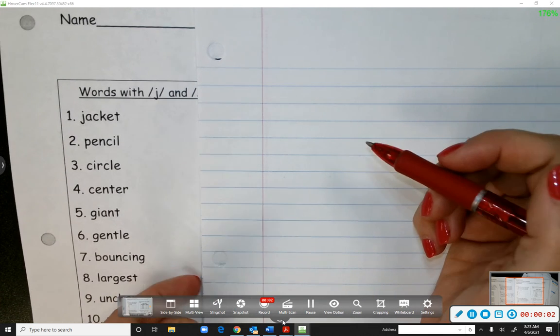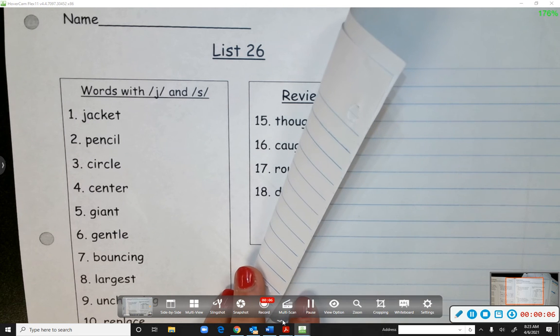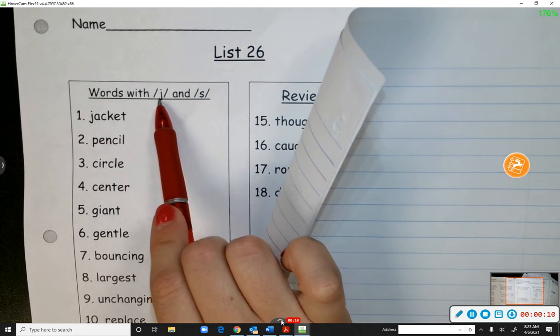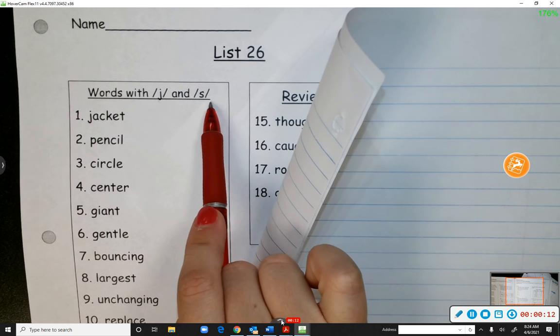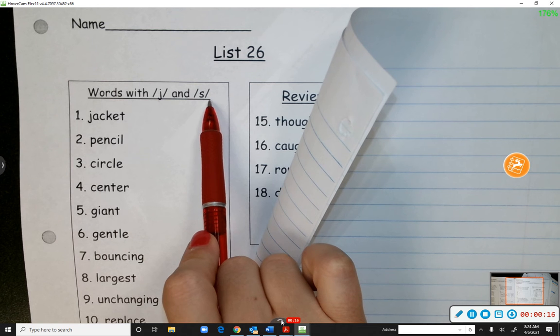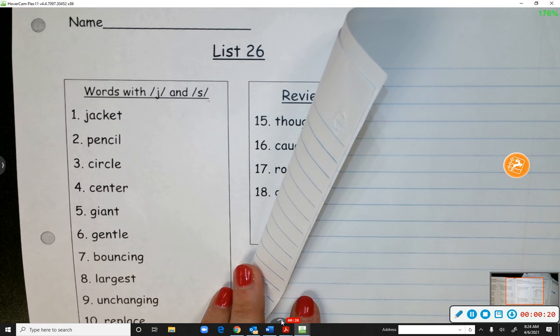Okay, we did not get to go over spelling words yesterday for list 26, so we're going to go over that now. The words this week are focusing on the J sound and the S sound. Now, with the S sound, that does not mean it's going to be an S. What other letter sometimes makes the S sound? C.